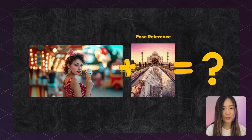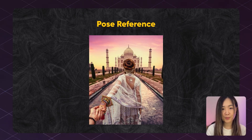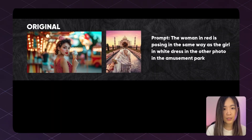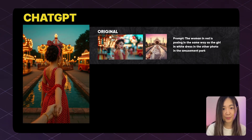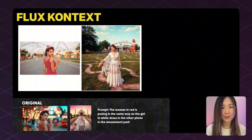Let's test using one image as a pose reference to recreate the same character in that pose. I uploaded a photo of the popular 'follow me' pose from social media, and prompted: 'the woman in red dress is posing the same way as the girl in white dress in the other photo, in the amusement park.' ChatGPT nailed the follow-me post and understood the specific elements to extract from the reference image. Context didn't quite understand it — it kept placing both subjects in the same image instead of using one as a pose reference. For multiple images with complex instructions, ChatGPT takes the win.